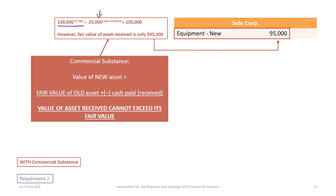Sulu is receiving cash of $25,000, so the net fair value of the asset going out is $105,000. However, the fair value of the asset being received is only $95,000. Since $105,000 is greater than $95,000, we cannot record the new asset above its fair value. Therefore, the new asset must be recorded at its fair value of $95,000.